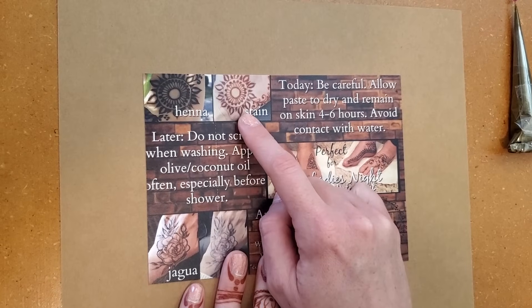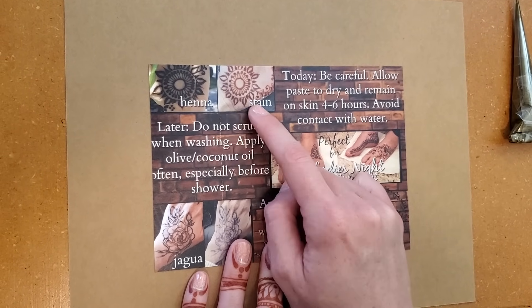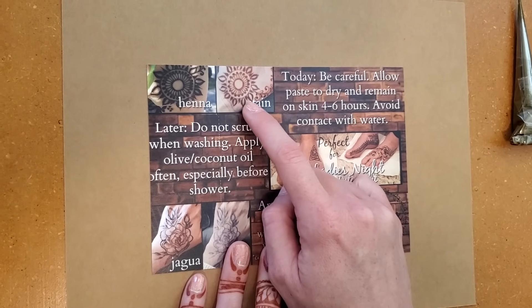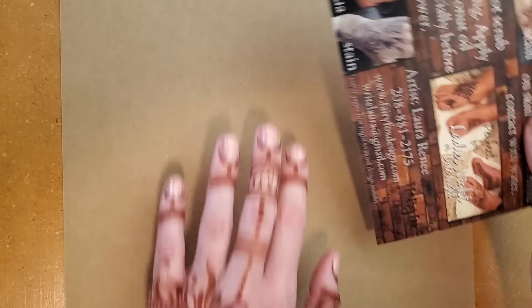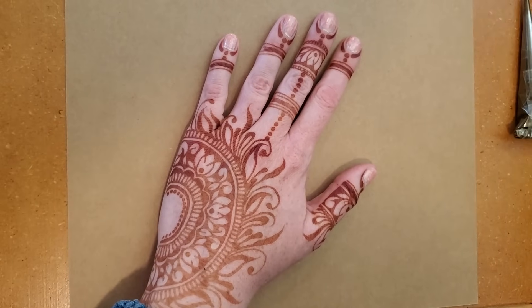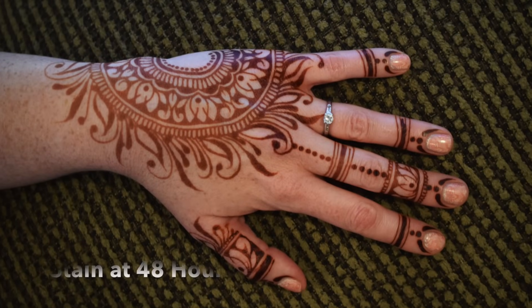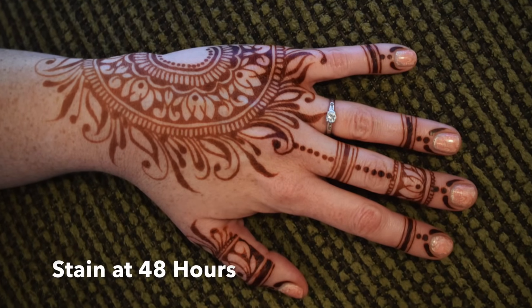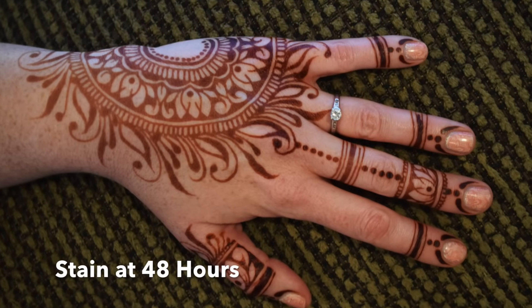This is with the paste still on the skin. The skin is going to interact with the paste and it's going to get a stain. It's quite light when the paste first comes off and then it will darken over the next 24 to 48 hours. So this stain on my hand right now is one day old. But the longer you leave the paste on the skin and the fresher the paste is and the higher quality the paste is, the darker the stain will be.